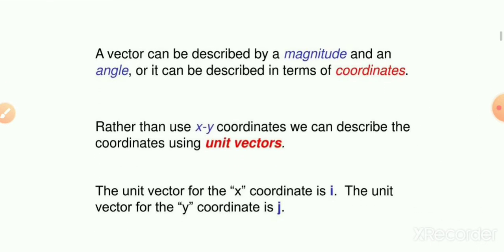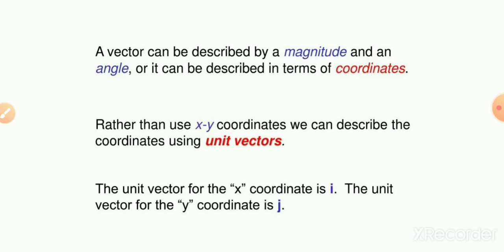To begin our topic, we need to identify what a vector is and what coordinate is required. A vector can be described by magnitude and an angle, or it can be described in terms of coordinates. A vector defines both direction and magnitude. Various kinds of coordinates can be used; here we are initially talking about the XY coordinate, that is the Cartesian coordinate system. If we know the unit vector, we can identify the vector's location and direction.